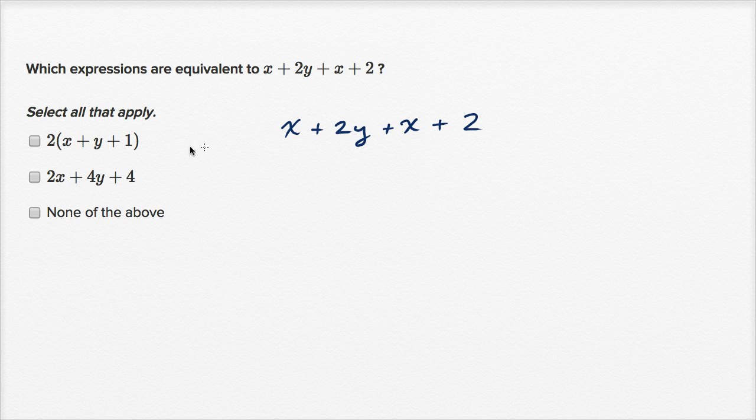So the first thing that jumps out at me, before I even look at these choices here, I have an x over here, I have an x over there. Well, if I have one x and then I can add it to another x, that would be 2x. So I could rewrite this in a different color. I could rewrite this x and this x. If I add them together, that's going to be 2x.